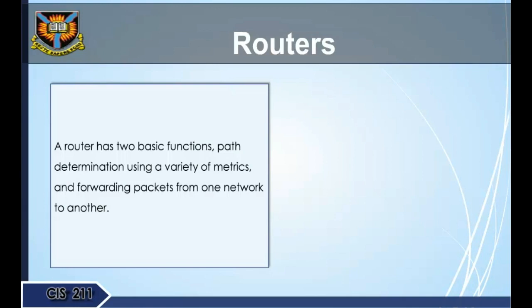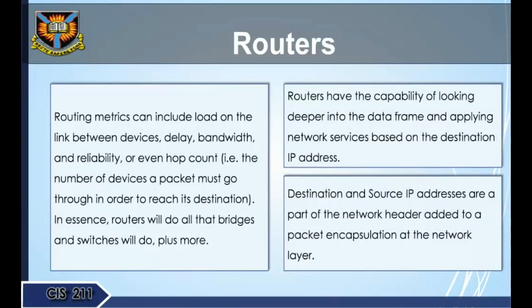A router has two basic functions: path determination using a variety of metrics, and forwarding packets from one network to another. Routing metrics can include load on the link between devices, delay, bandwidth, reliability, or hop count — the number of devices a packet must go through to reach its destination. Routers do all that bridges and switches do, plus more: they have the capability of looking deeper into the data frame and applying network services based on the destination IP address. Destination and source IP addresses are part of the network layer header in packet encapsulation.